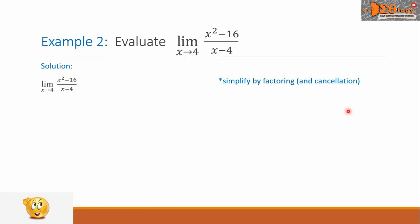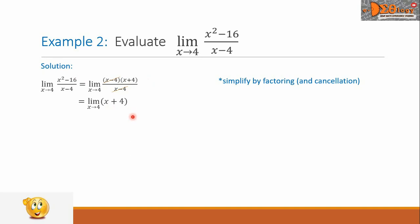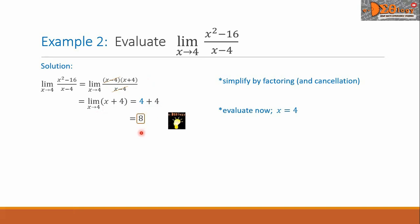So we are going to simplify again by factoring and look for possible cancellation. The x squared minus 16 factors into x minus 4 times x plus 4. We can see that x minus 4 is common in the numerator and denominator, so we cancel it out. The limit is now simplified into x plus 4. Substituting the value 4 gives us 4 plus 4, and the sum is 8. This is our final answer.